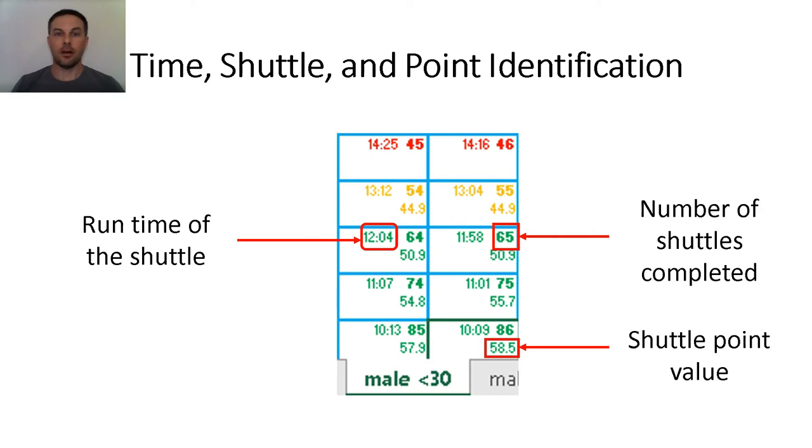The left number is the run time the airman would have got if they ran the 1.5 miles. You would put that time in the AFIMS and calculate it for their cardiovascular component. Under the bold number with the decimal point is the value of that shuttle and the correlated run time. The airman can use that run time to calculate their overall score by using the AFIMS calculator.